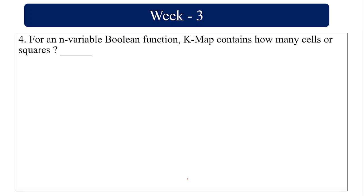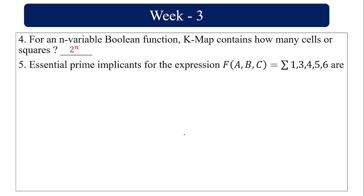For an n-variable Boolean function, a K-map contains 2^n cells. For 2 variables it's 4 cells, for 3 variables it's 2^3 = 8 cells, and for 4 variables it's 2^4 = 16 cells. The standard formula is 2^n.